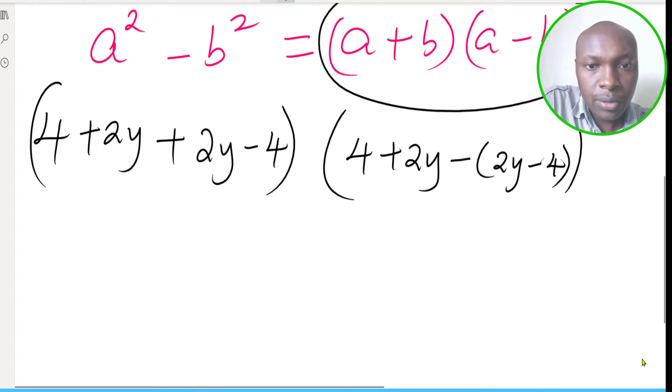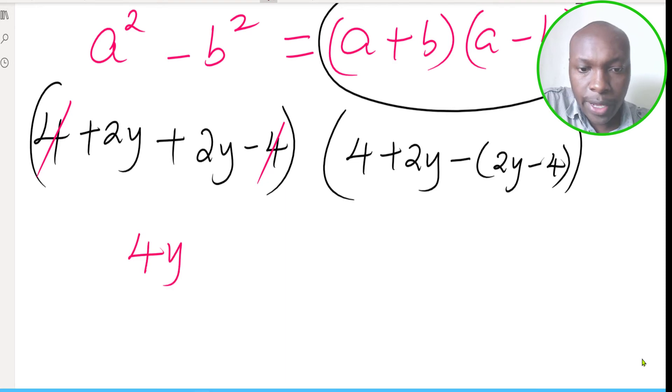So simplifying this, 4 subtract 4, when you look at this, that and that will subtract each other. You have 2y plus 2y, this will give 4y, and then into brackets.